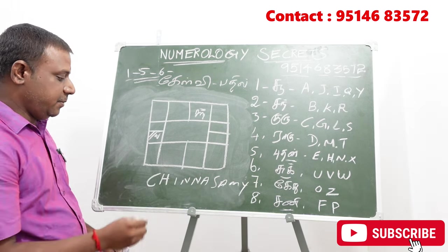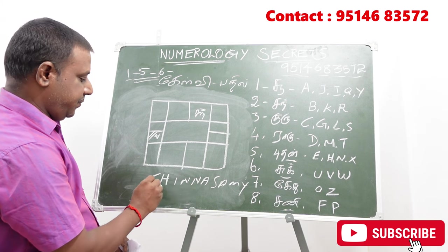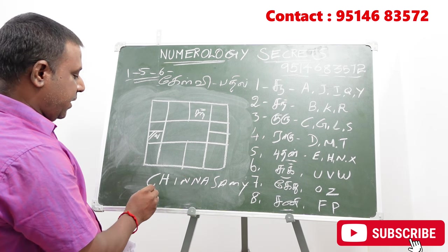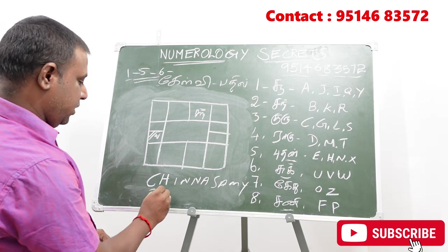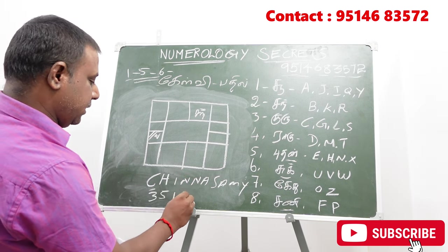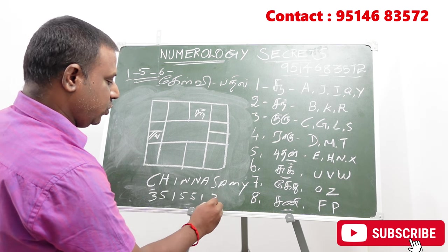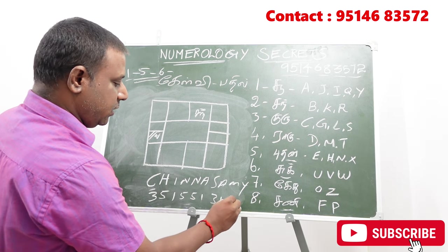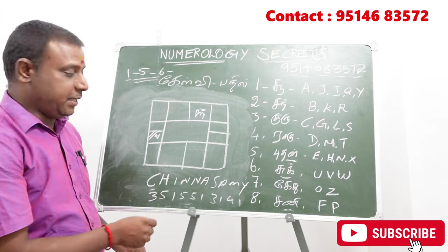If you have the name Chinnasami, you can write it out. The numerical values are: 3, 5, 1, 5, 5, 5, 4, 5, 5, 5, 5, 6, 7, 8, 8, 9, 9, 10.